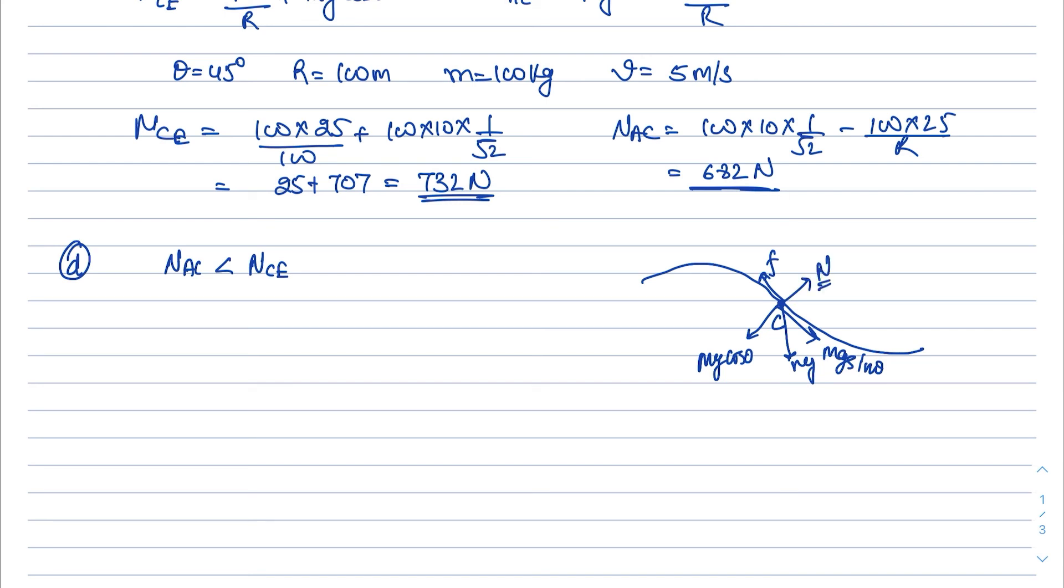frictional force that is F required should be less than equal to mu into N. So this N is minimum at AC. So F required is nothing but MG sine theta should be less than equal to mu times NAC was 682 Newton. Now putting the value here, M is 100 into G is 10 into sin 45 degree is 1 by root 2 less than mu times 682.